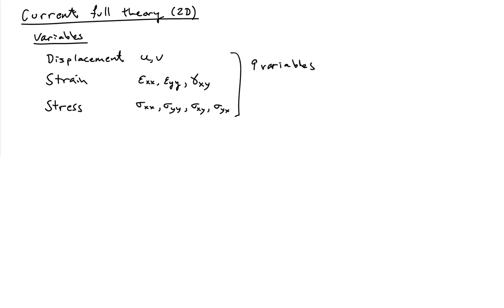First of all, we have introduced nine variables into the theory: two displacements, one in the X, one in the Y; three strains, so two normal strains and a shear strain; and four stresses, two normal stresses and two shear stresses.